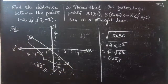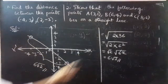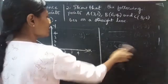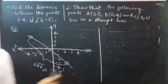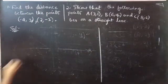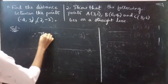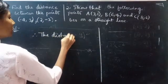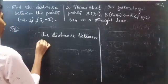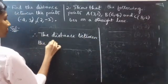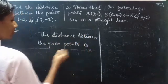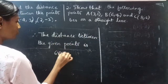So now coming to the second problem — this completes the first problem. Therefore, the distance between the given points is 6 root 2.